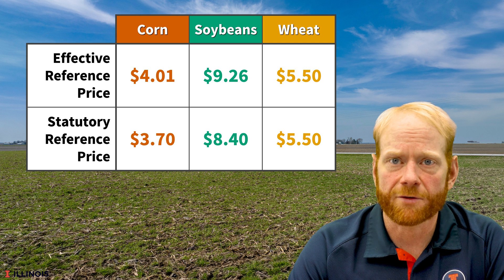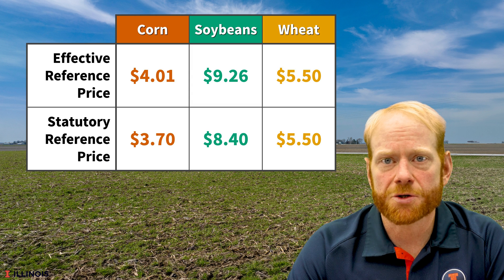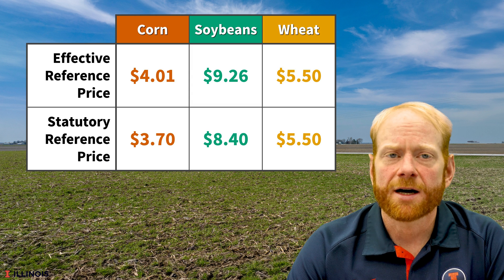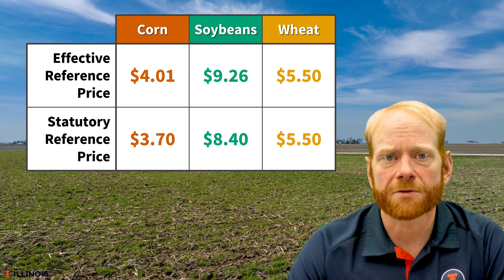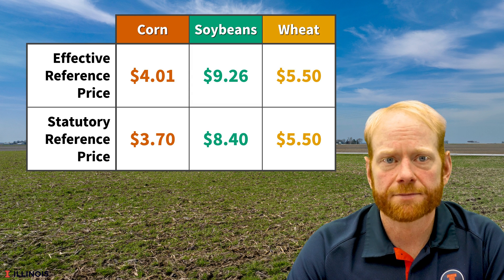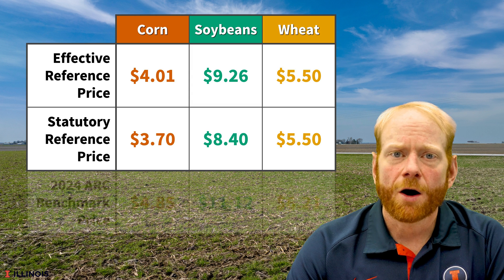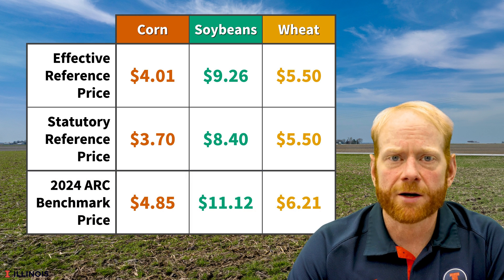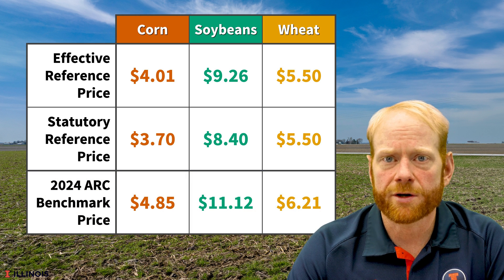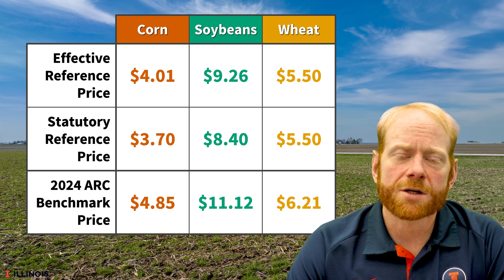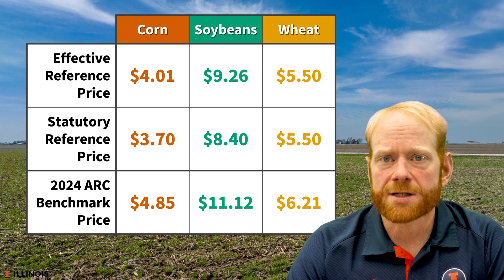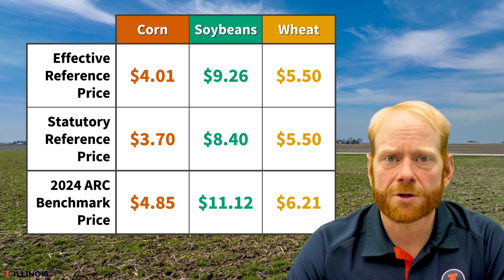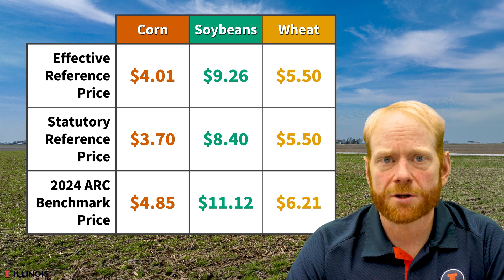Wheat's effective reference price remains at the statutory minimum of $5.50 per bushel for 2024. All three crops have higher ARC program benchmark prices for 2024 compared to 2023 and earlier years. Corn's ARC benchmark price is $4.85 per bushel. Soybeans are at $11.12 per bushel.